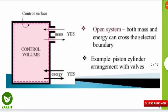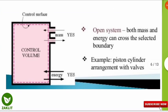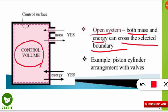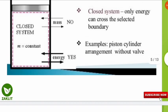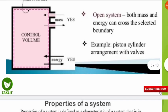In an open system, both mass and energy can cross the selected boundary. As you can see in the picture, the volume is controlled and mass can easily transform across the boundary, as can energy. This is the piston-cylinder arrangement with a valve: when the valve is present, both mass and energy can cross the boundary.